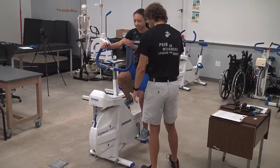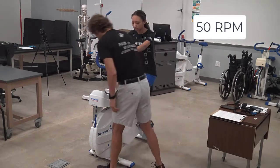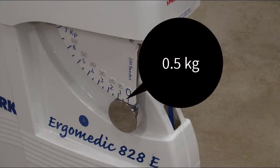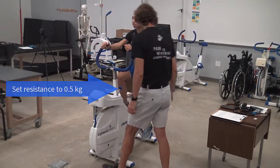Set the metronome if needed and have the participant pedal at a rate of 50 revolutions per minute. If there is a display on the cycle ergometer, that can be used instead. Set the workload, which is standardized, at half a kilogram of resistance. In this case, it is adjusted with a turning knob since it is a pendulum ergometer.